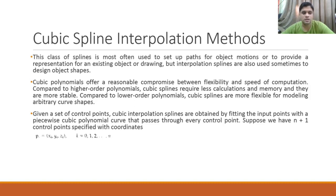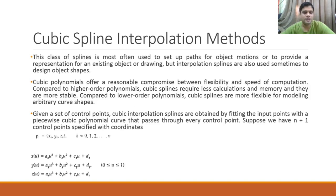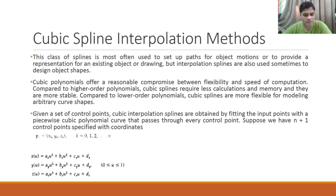Given a set of n+1 control points with coordinates p_k = (x_k, y_k, z_k) for k = 0, 1, 2, … n, we can write separate equations for x, y, and z: x(u) = ax·u³ + bx·u² + cx·u + dx, y(u) = ay·u³ + by·u² + cy·u + dy, and z(u) = az·u³ + bz·u² + cz·u + dz, where u varies between 0 and 1.